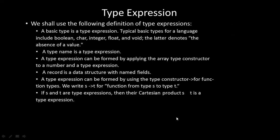Now we discuss how we define type expressions — either basic type or constructor type. A basic type is a type expression, and typically basic types for a language include character, integer, float, and void, where void denotes the absence of values. Type name is also a type expression.